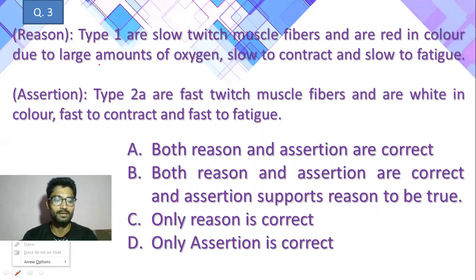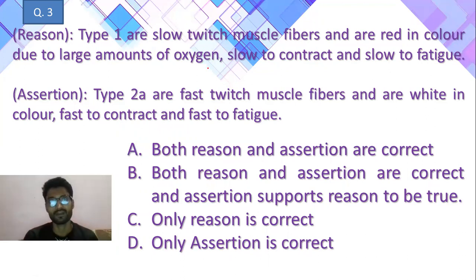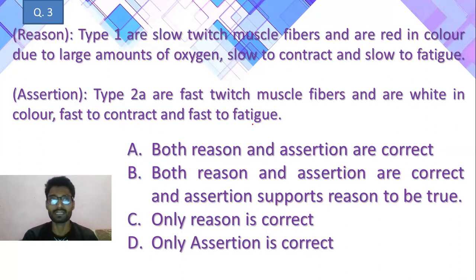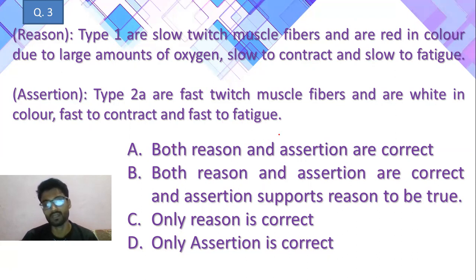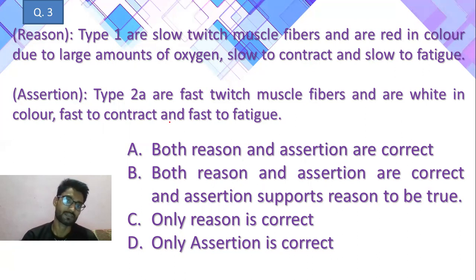Question number 3 — assertion-reason type. Reason: Type 1 are slow twitch muscle fiber and are red in color due to the large amount of oxygen, slow to contract and slow to fatigue. Assertion: Type 2 are fast twitch muscle fiber, white in color, fast to contract and fast to fatigue. Options: A — both correct, reason explains assertion; B — both correct but reason doesn't support assertion; C — only reason correct; D — only assertion correct. आपके पास 20 seconds हैं इसका answer लगाने के लिए।